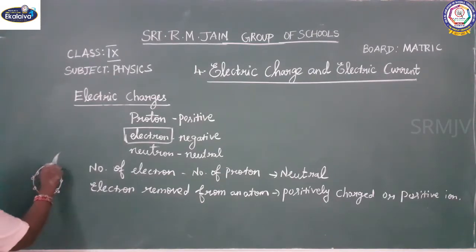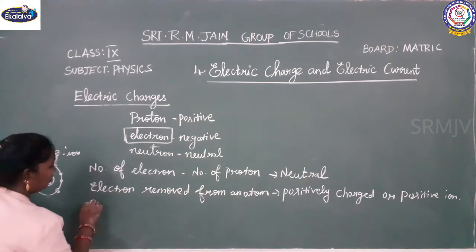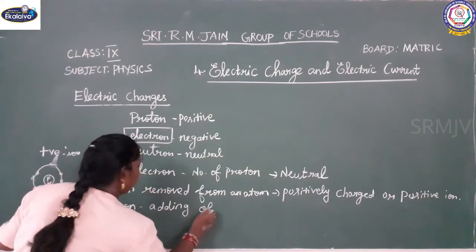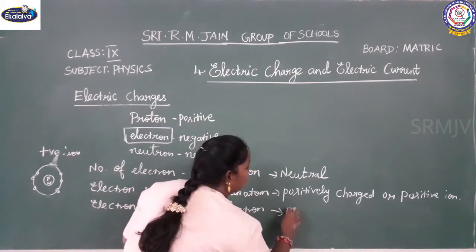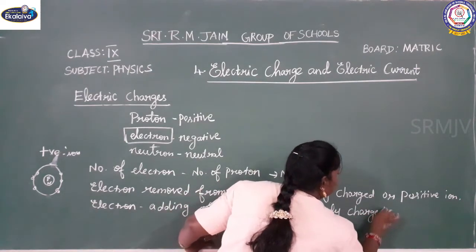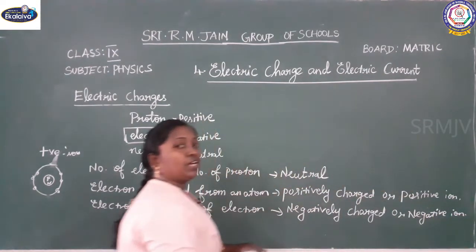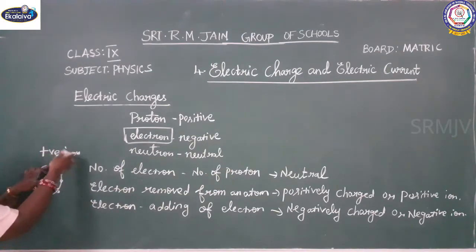For example, in the nucleus there are protons and neutrons, and electrons move freely around it. When you remove one electron, this atom will become a positive ion. When an electron is added to an atom — by the addition of an electron — the atom will become negatively charged, or it will get a negative ion.